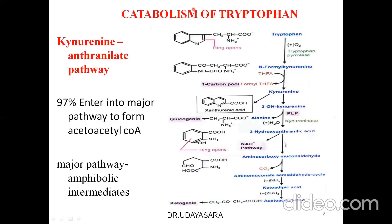Coming to the catabolism of tryptophan, 97% of the molecule enters the major pathway called the kynurenine-anthranilate pathway, where kynurenine and anthranilic acid are formed. Most molecules enter this major pathway to form acetoacetyl-CoA. In the major pathway, amphibolic intermediates are produced, meaning both anabolic and catabolic functions are served.